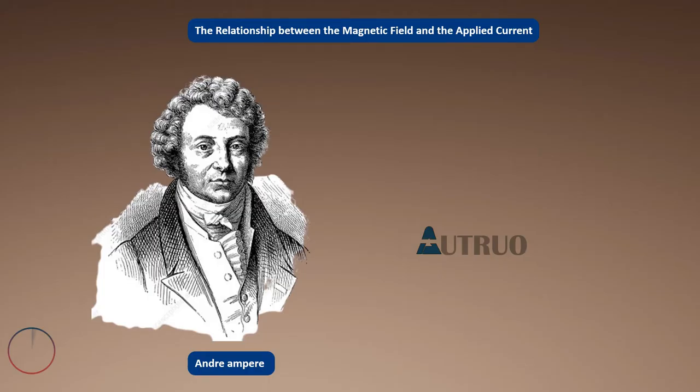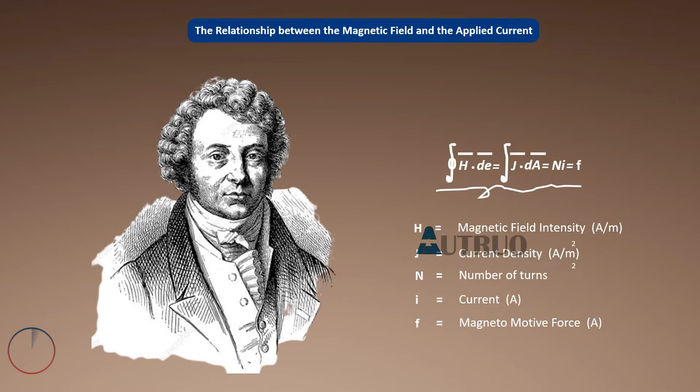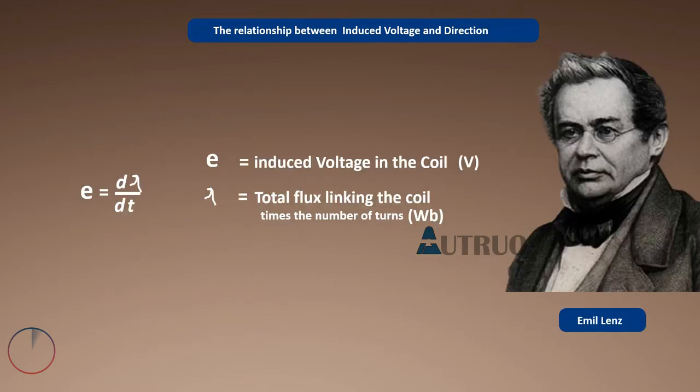André Ampère, a native from France, carried out research work on electromagnetism. He was credited to have discovered the relationship between the magnetic field and applied current. Further on, Lenz discovered the direction of induced voltage in a coil. That is, the total flux linking the coil times the number of the coil's turns. This discovery was very handy.